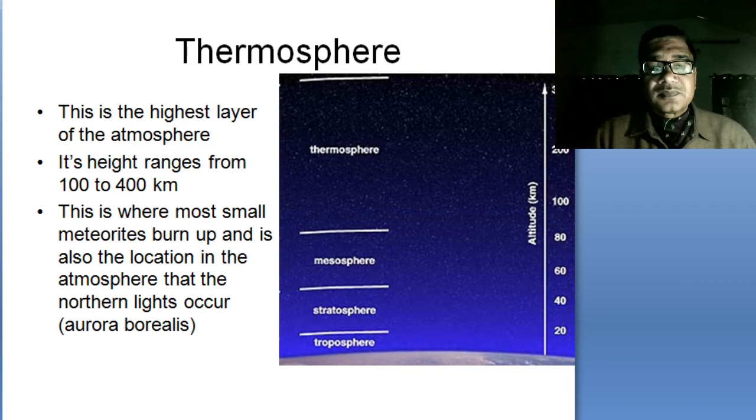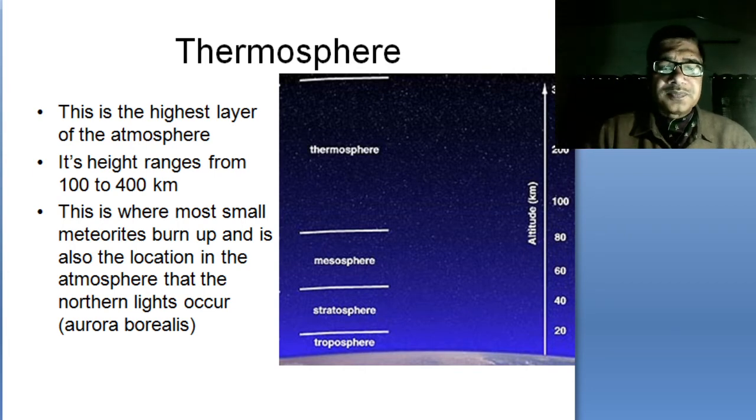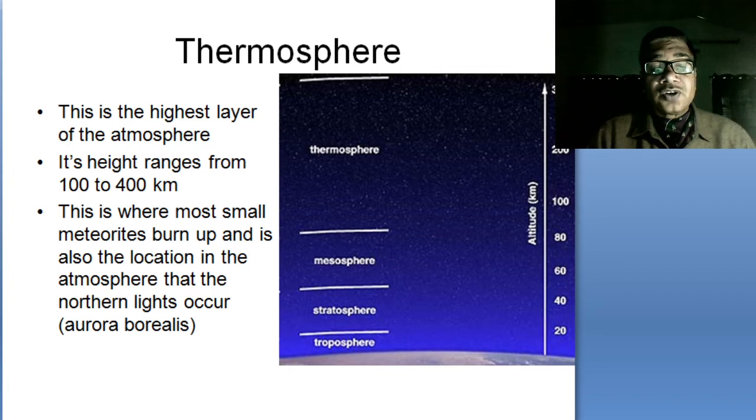And then we have thermosphere. This is the highest layer of the atmosphere. The height ranges from 100 to 400 kilometers. This is where most small meteoroids burn up and is also the location in the atmosphere that the northern lights occur known as aurora borealis. Now I will tell you everything about it.